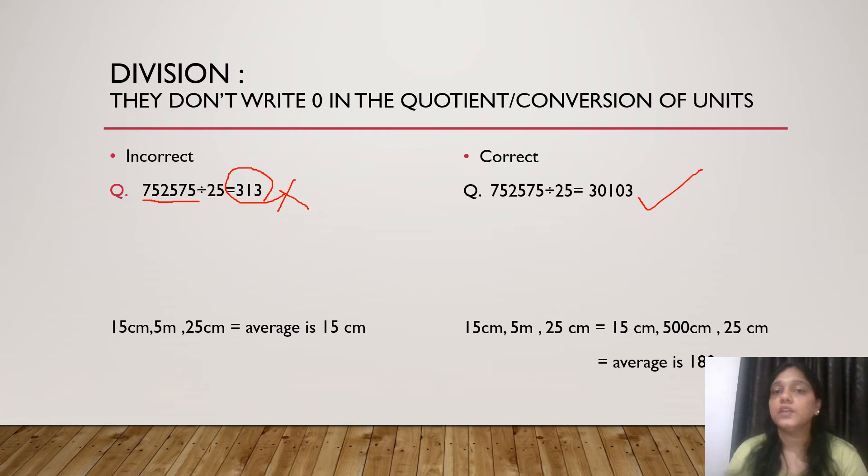In average sums also, they get confused in conversion of the units. They cannot find average that are expressed in different units. The quantities must have converted in the same unit to find average. Let us take one example. We have three numbers. 15cm, 5m and 25cm.